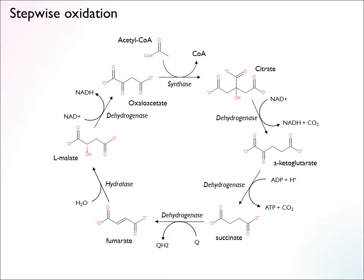Citrate is a tricarboxylic acid — it has three carboxyl groups, and that's a feature of most of the acids in this cycle. They have a lot of carboxyl groups, so they are pretty oxidized already, and they're ripe for cutting off these carboxyl groups, generating carbon dioxide, and liberating energy. Starting from citrate, at each step we have a successive oxidation of this compound until we come full circle and go back to oxaloacetate.